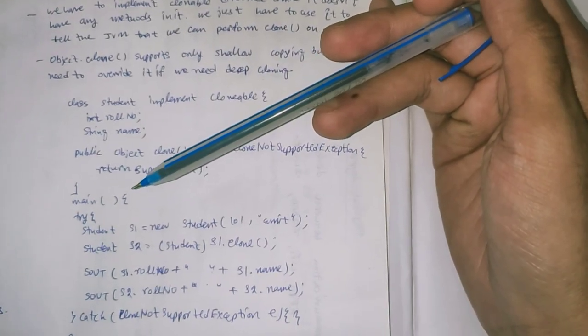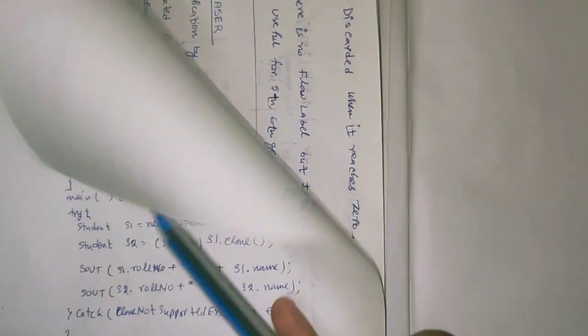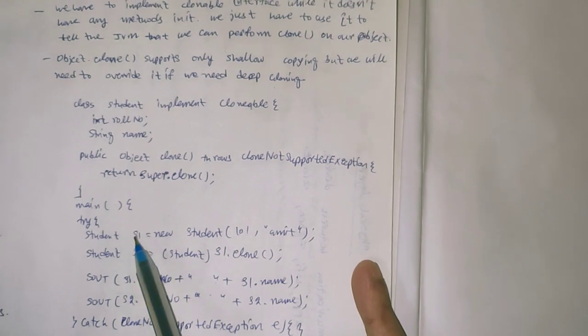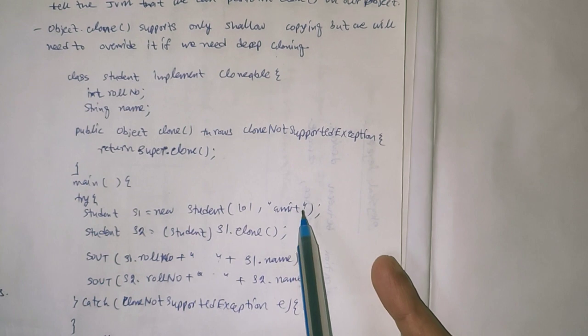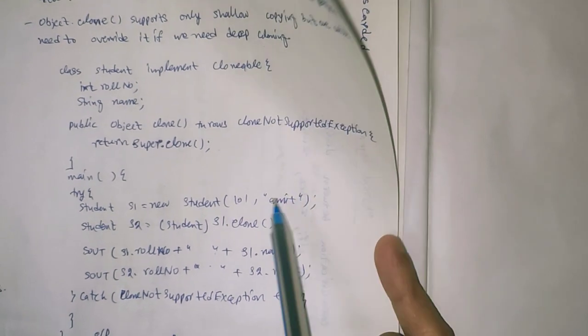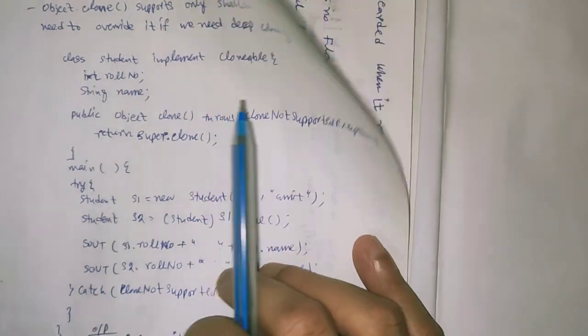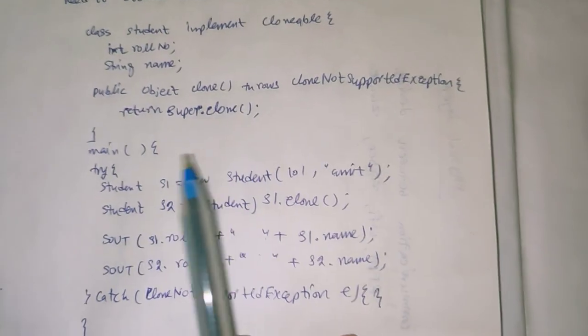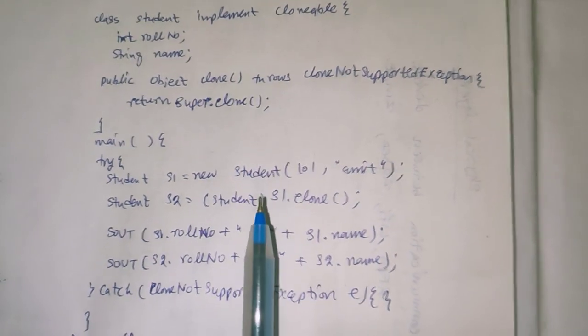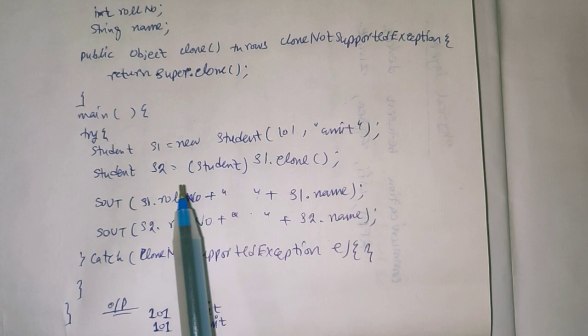Later the main method is there. Inside the try block there is student s1 equal to new student 101 and amit. This is passed through the new student constructor. Student s2 equal to student typecasting s1.clone. This is the clone object of student class.